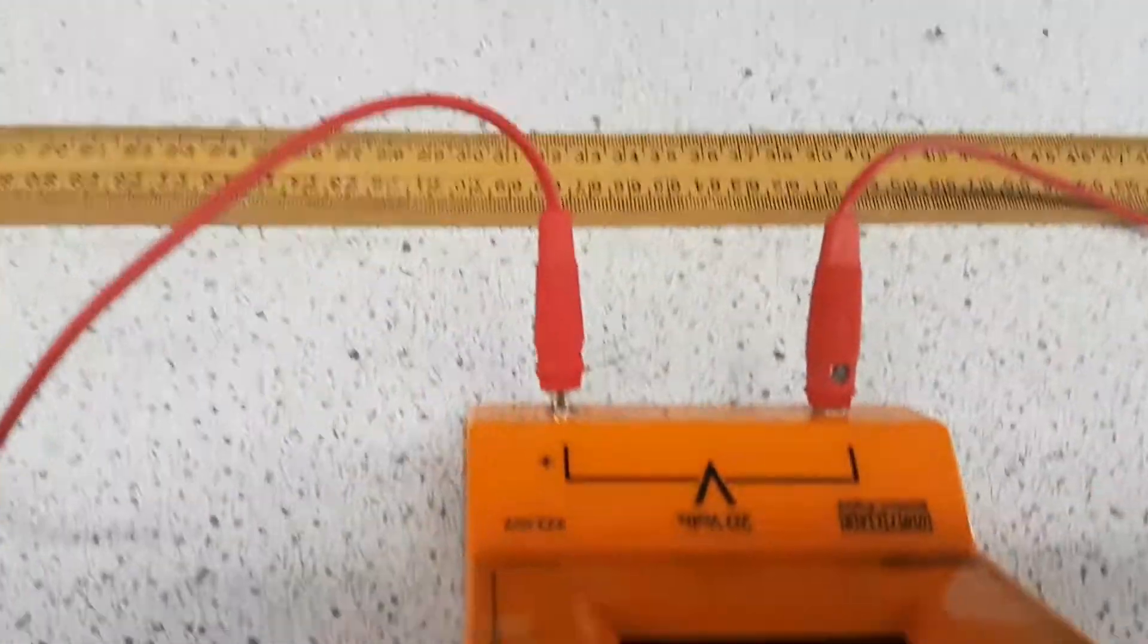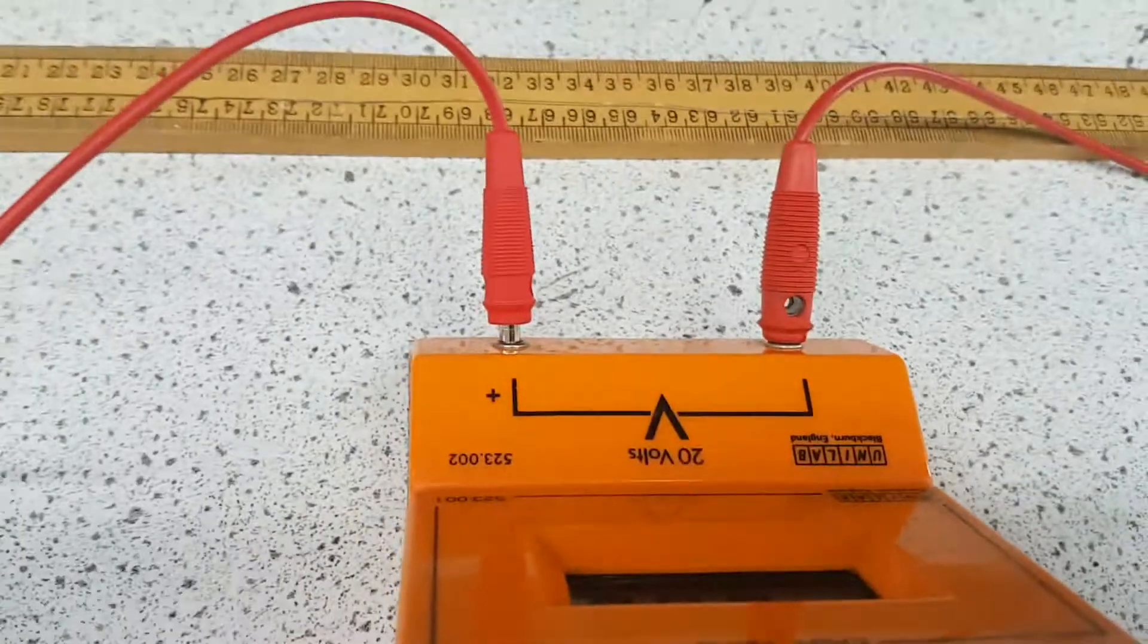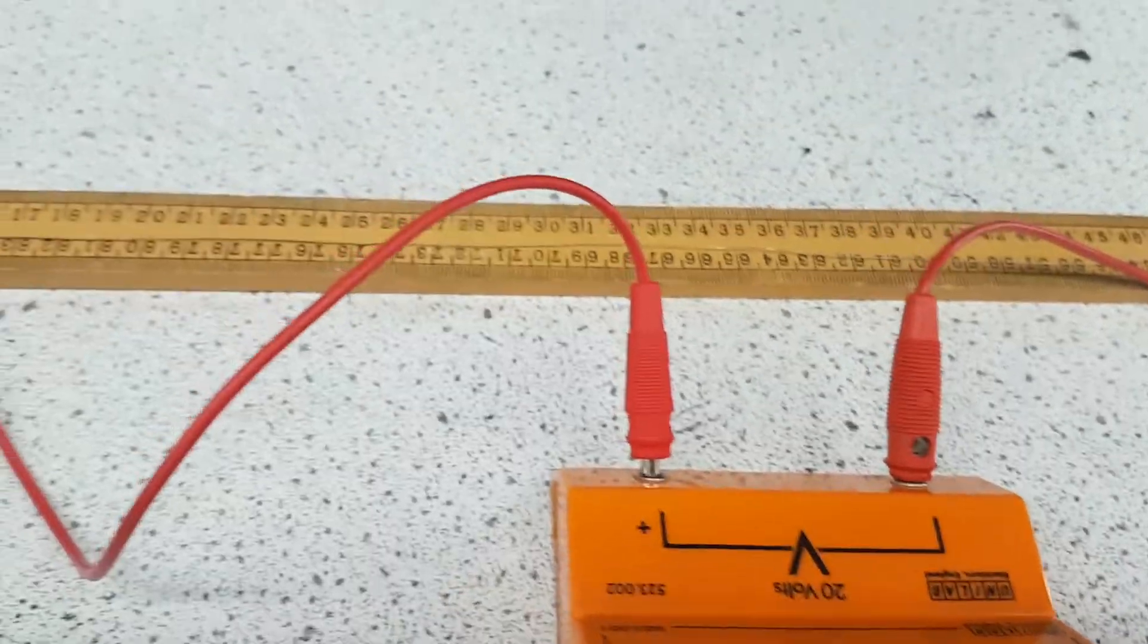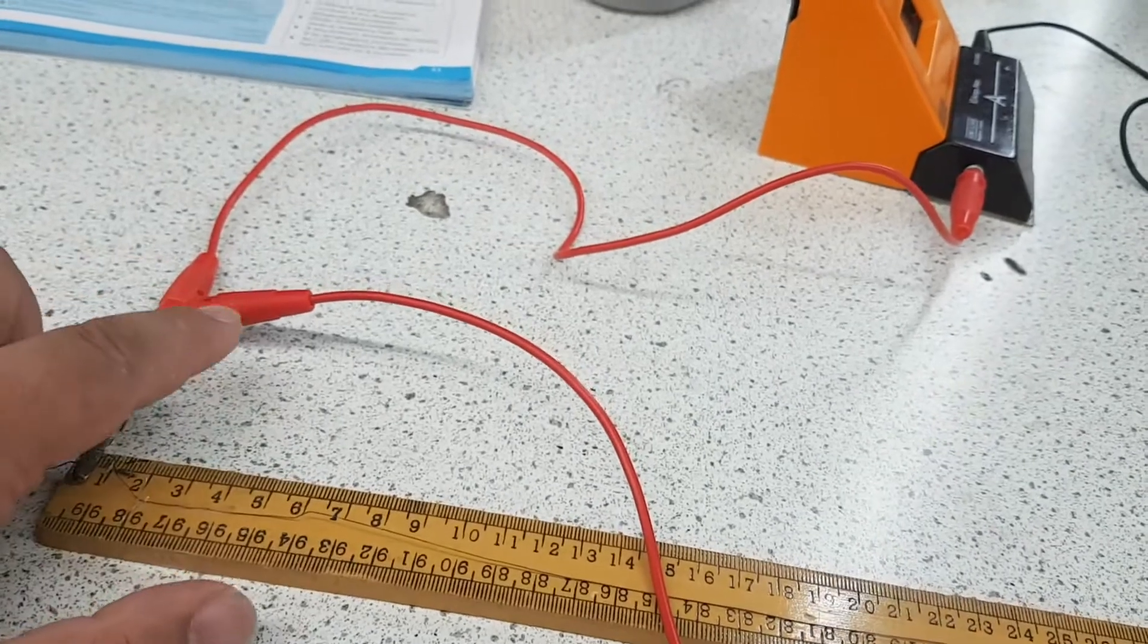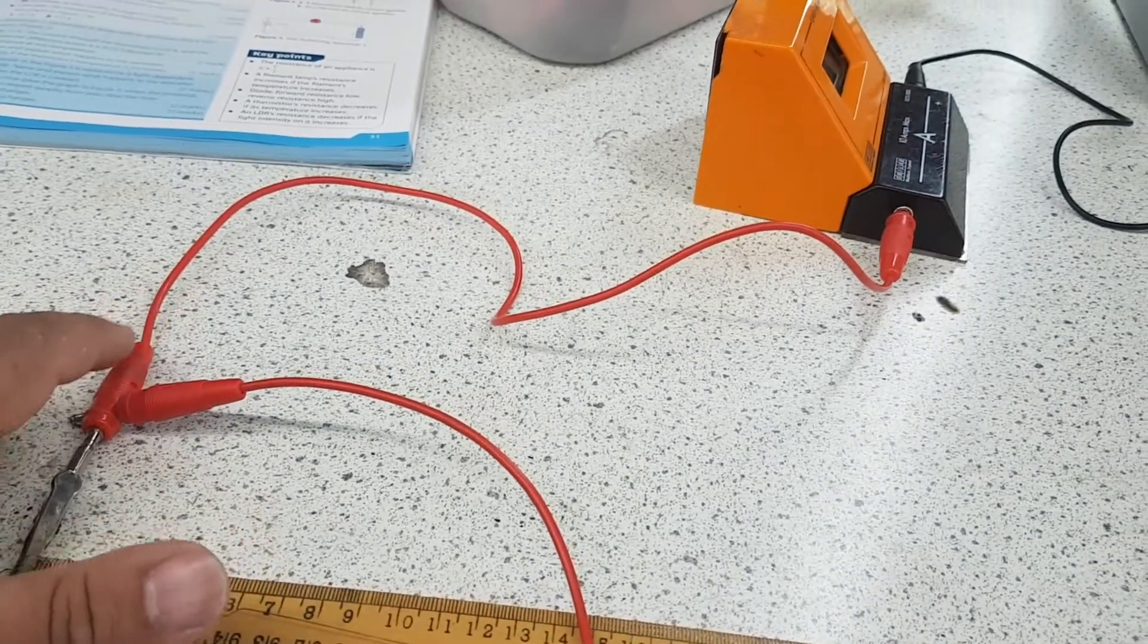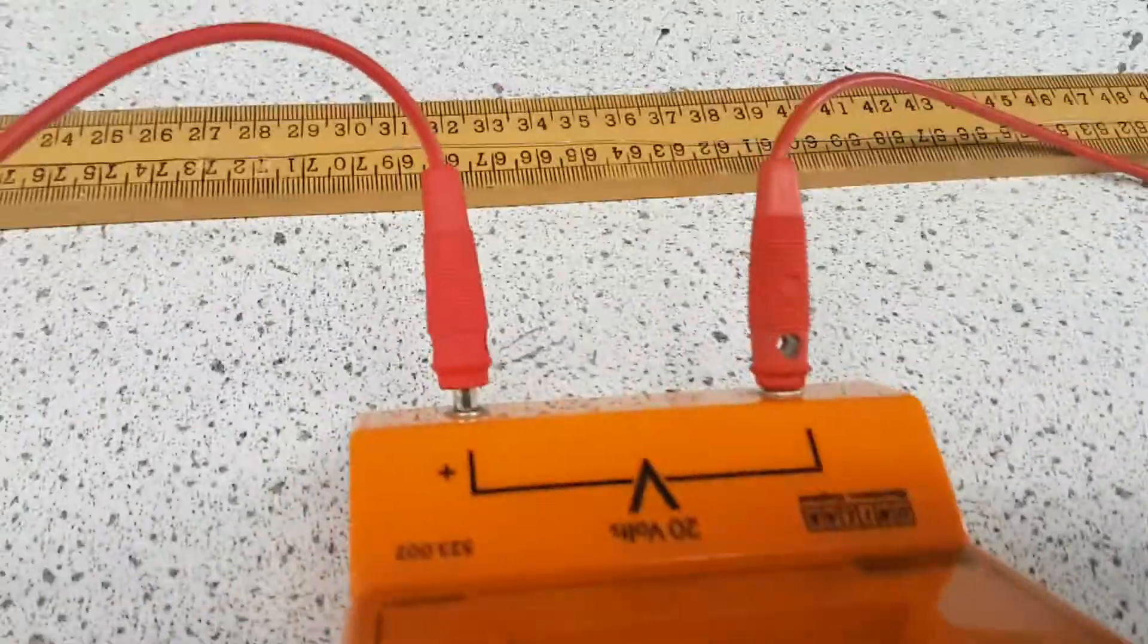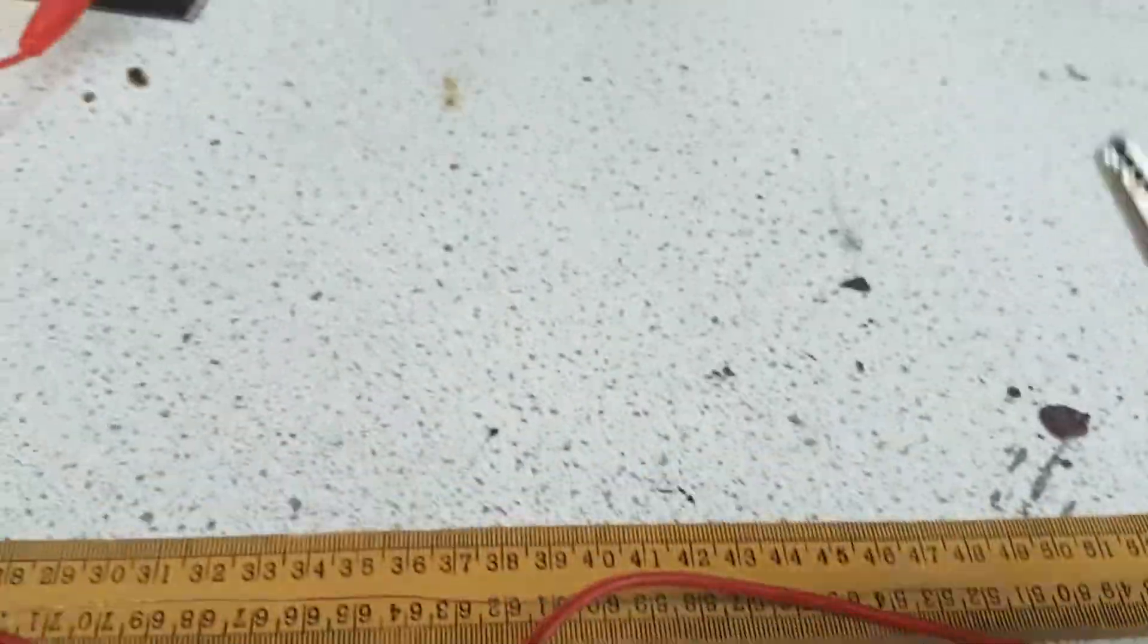Then what we're going to do is take our voltmeter and connect it in parallel to this part of the wire. Now, to do that, we can just connect it up to the lead that's coming from the ammeter.